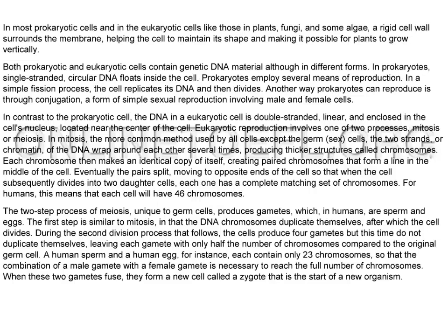Another way prokaryotes can reproduce is through conjugation, a form of simple sexual reproduction involving male and female cells. In contrast to the prokaryotic cell, the DNA in a eukaryotic cell is double-stranded, linear, and enclosed in the cell's nucleus, located near the center of the cell.